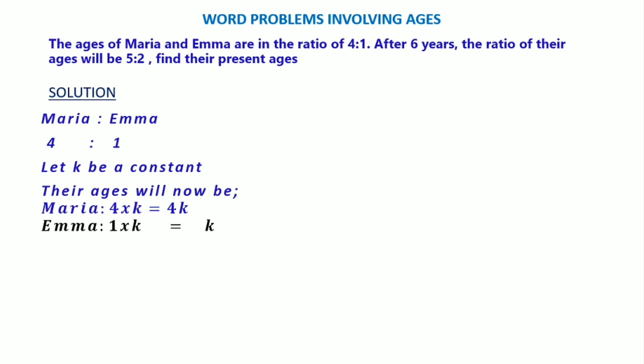Let's see after six years what happens. As the question states, after six years the ratio of the ages will be 5:2.